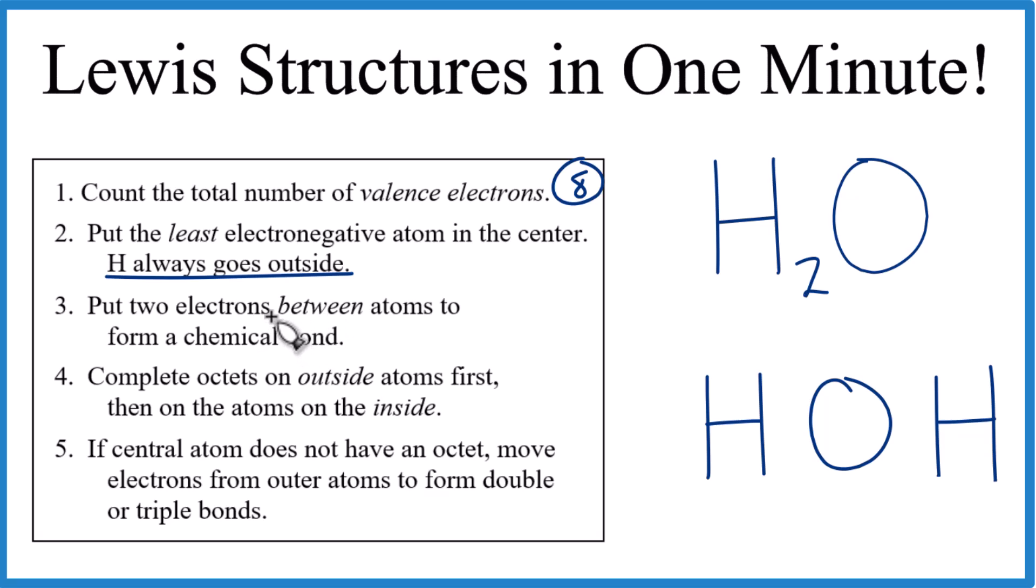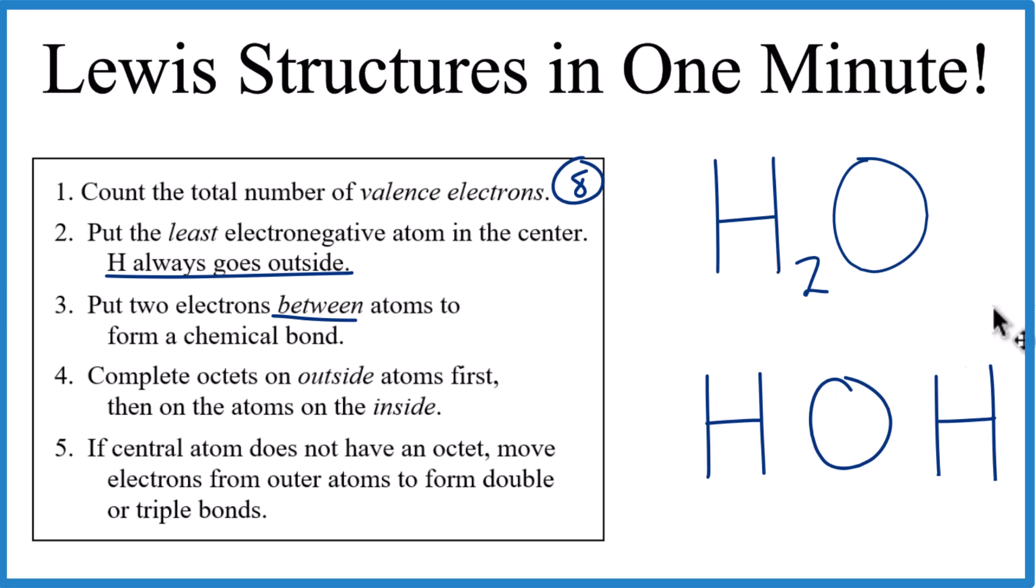Next, we're going to put a pair of electrons between the atoms that'll form the chemical bonds. Here and here. We've used four, so we have four more.